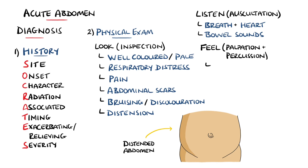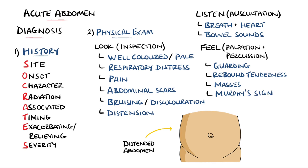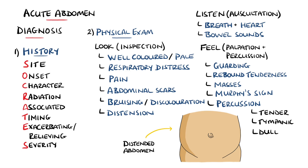Next comes palpation. A diffuse tenderness with a rigid abdomen with guarding or rebound tenderness may point towards peritonitis, but we may also look for any lumps that may indicate a hernia as the underlying cause. We can also look for Murphy's sign, where palpation of the liver when asking the patient to breathe in causes a sharp cessation in inspiration when the gallbladder comes into contact with the palpating hand, indicating acute cholecystitis. Percussion, if painful, may indicate peritoneal inflammation, but can also reveal dullness indicating underlying fluid, or tympany indicating air.